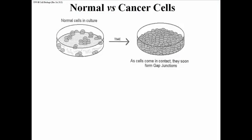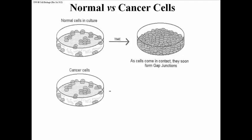Normal versus cancer cells: normal cells when placed in culture will grow to form a confluent single layer of cells and then they stop growing. They stop growing because when they come in contact, they actually form gap junctions that communicate with one another, and one of the communications is 'stop dividing.' That's why cells form this sort of flat one-cell layer if they are normal.